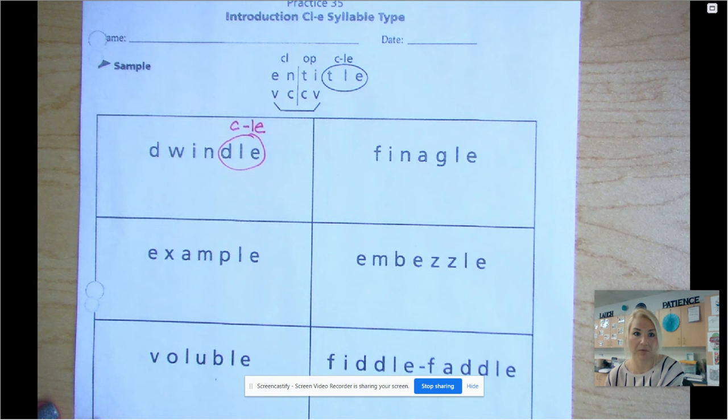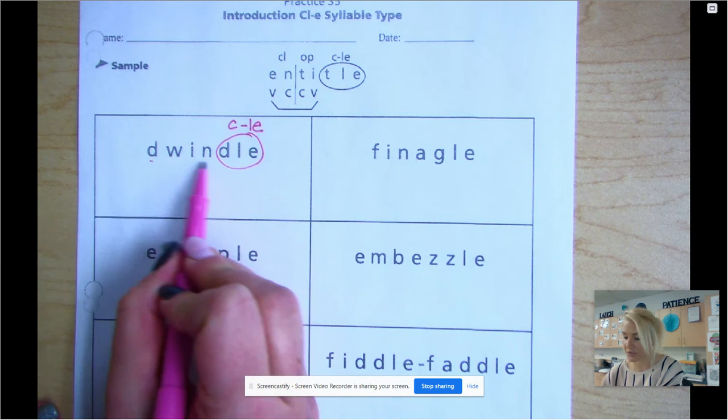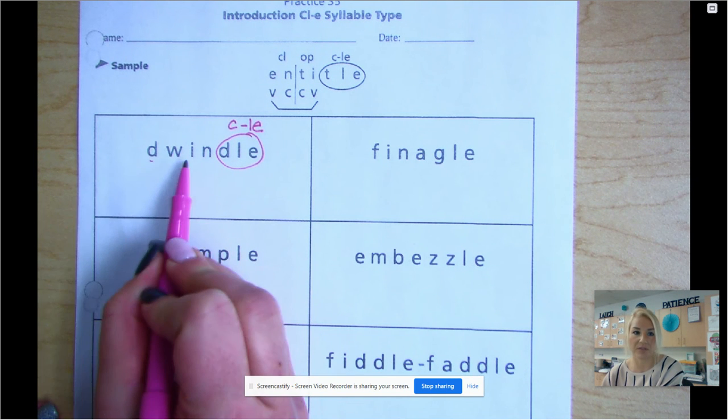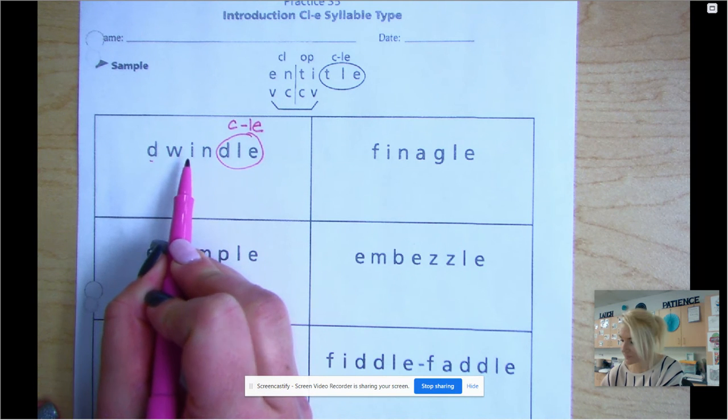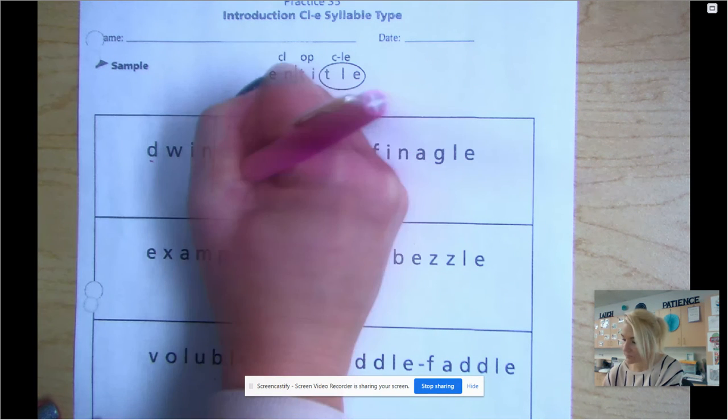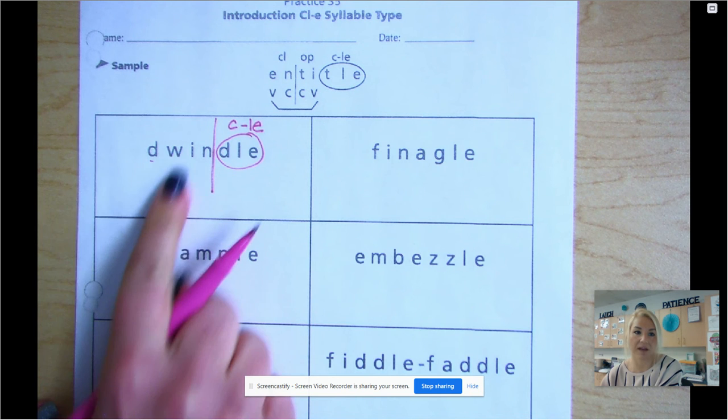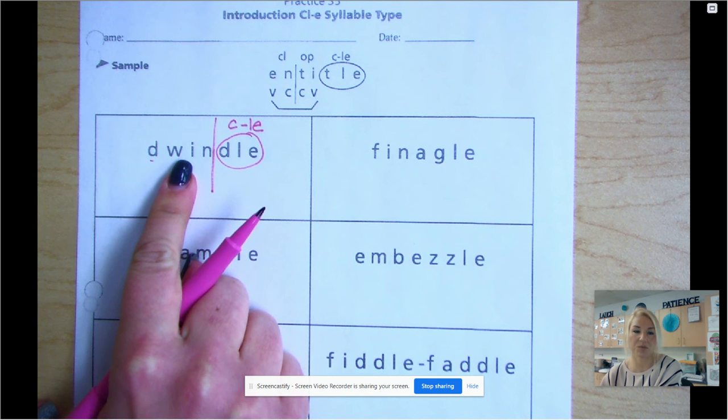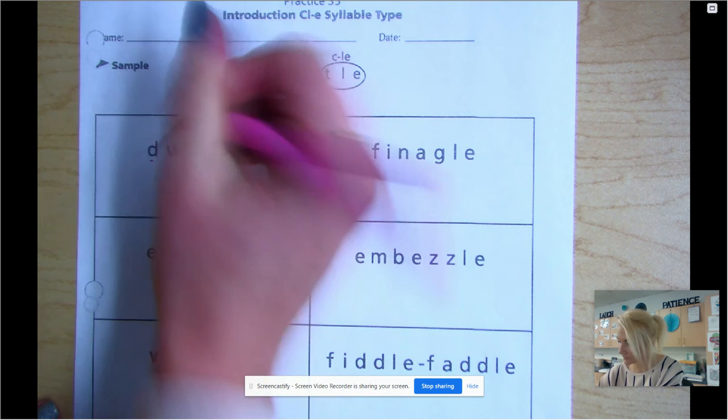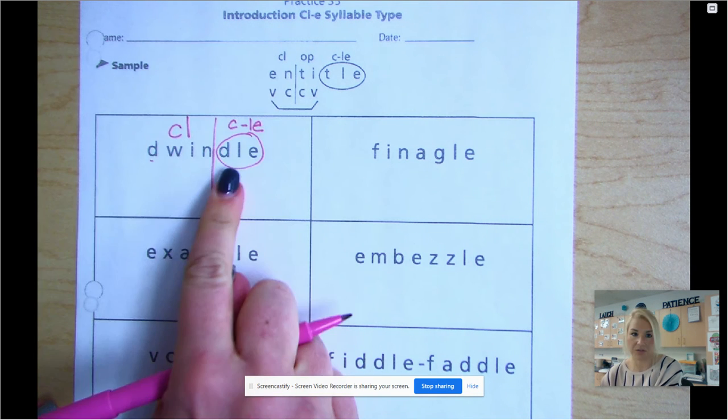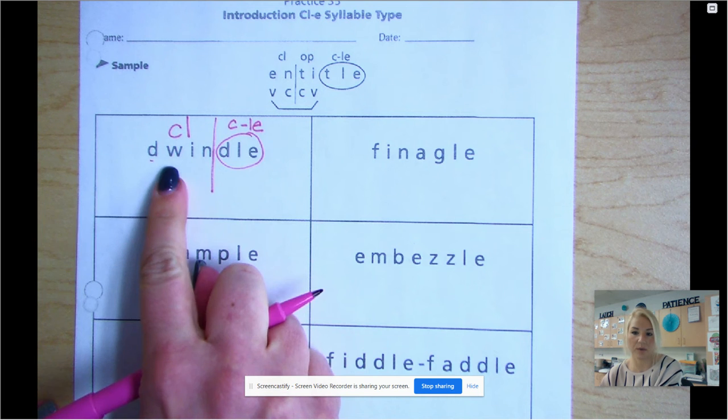You would label your vowels, but if you notice there's no other vowels other than I, which means I can't draw my bridge. So this one's really easy. I have two syllables. Now I have to say this syllable to label it. DwiN, that means it's a closed syllable. And then DuL. Put it together: dwindle.